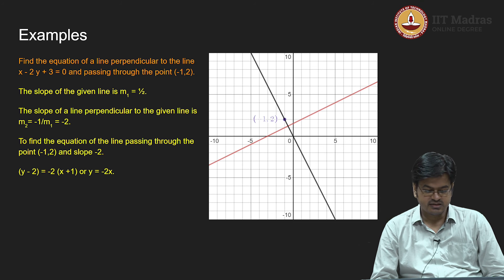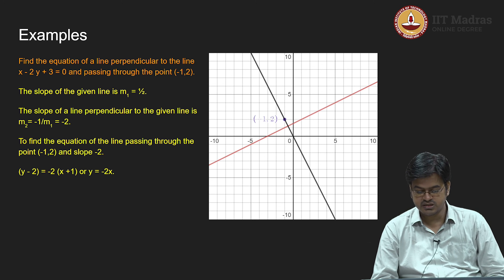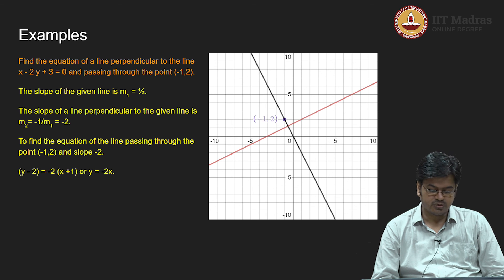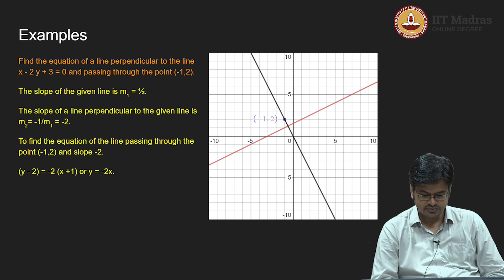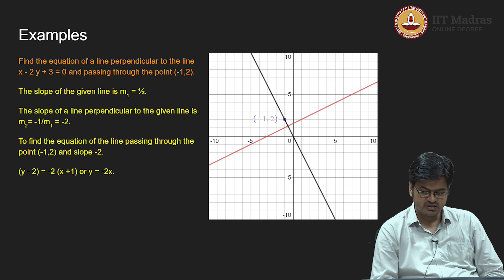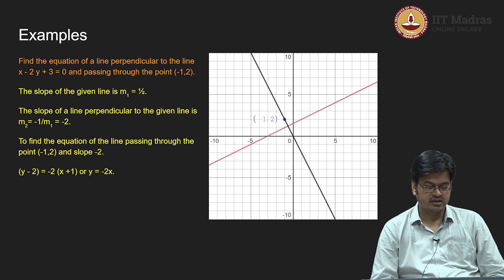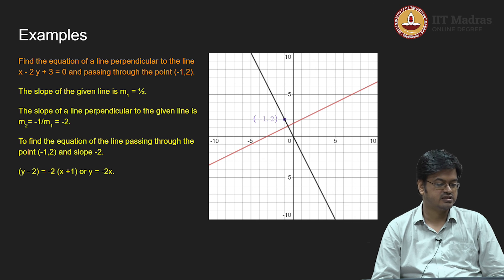The orange line is the line for which the equation is given, x minus 2y plus 3 equals 0. The point minus 1 comma 2 is displayed in the graph, and the line passing through it is also displayed. You can clearly see the angle that is made is 90 degrees. Therefore, the lines are perpendicular and our answer is correct.